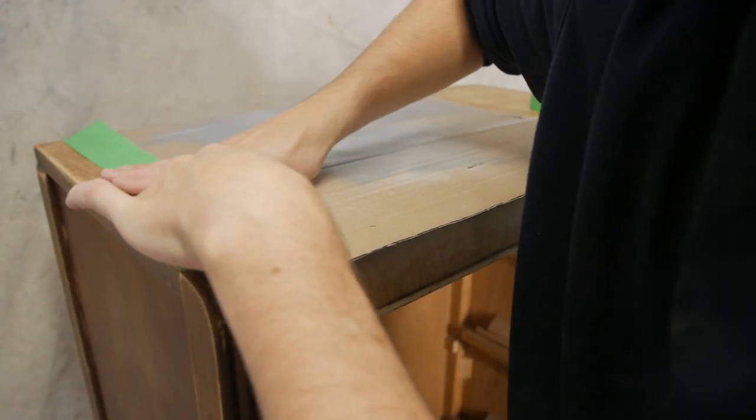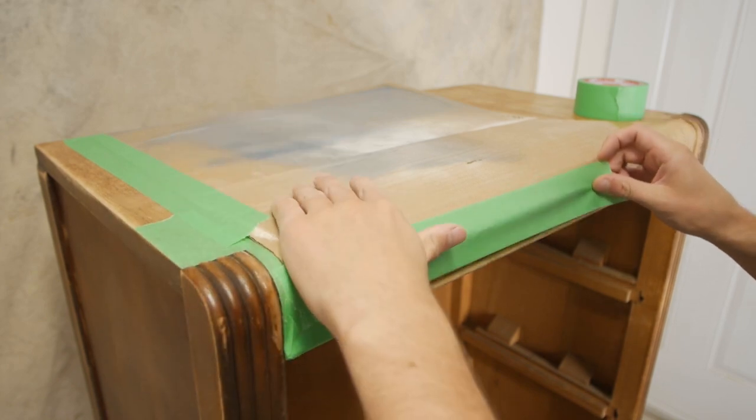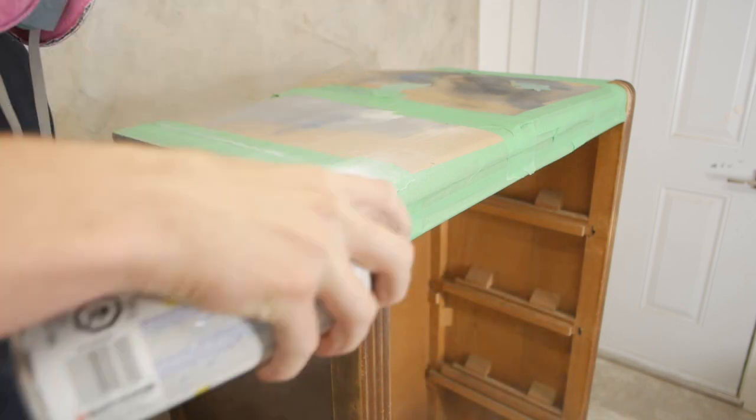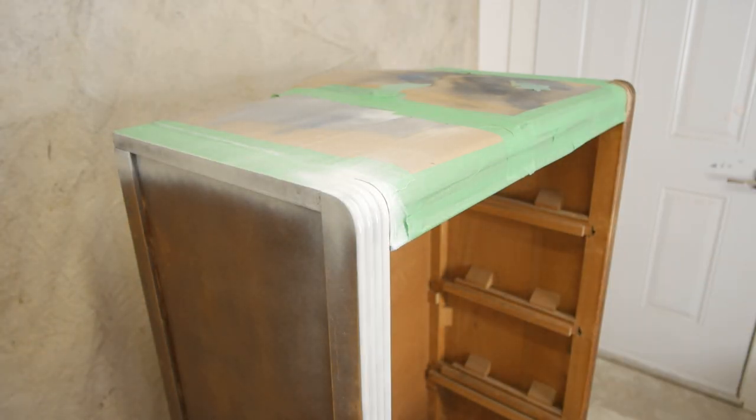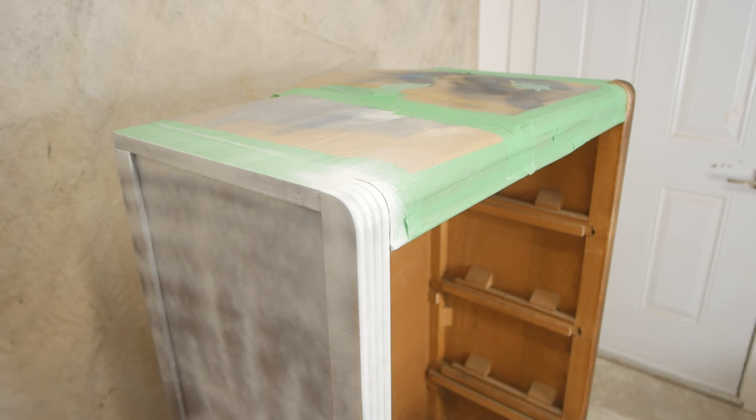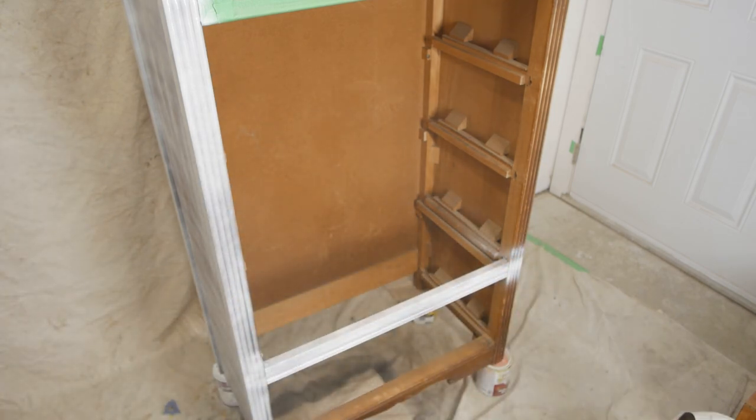I wanted to prime the surface first. I didn't have any gray on me - typically when you're painting with black paint you can use the darkest color you have, but I had some leftover white spray paint so I used that to prime the project.